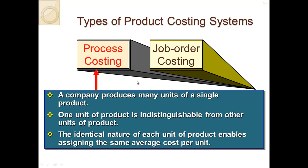Some examples of process costing: when you sell the exact same thing, like paper — one piece of paper is indistinguishable from the next. Also, Coca-Cola: if you're manufacturing Coca-Cola, one can is exactly like the next can. So that would use process costing.